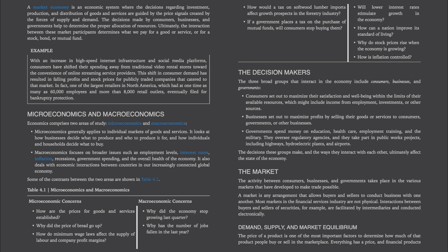Microeconomic concerns include: How are the prices for goods and services established? Why did the price of bread go up? How do minimum wage laws affect the supply of labor and company profit margins? How would a tax on softwood lumber imports affect growth prospects in the forestry industry? If a government places a tax on the purchase of mutual funds, will consumers stop buying them? Macroeconomic concerns include: Why did the economy stop growing last quarter? Why has the number of jobs fallen in the last year? Will lower interest rates stimulate growth in the economy? How can a nation improve its standard of living? Why do stock prices rise when the economy is growing? How is inflation controlled?